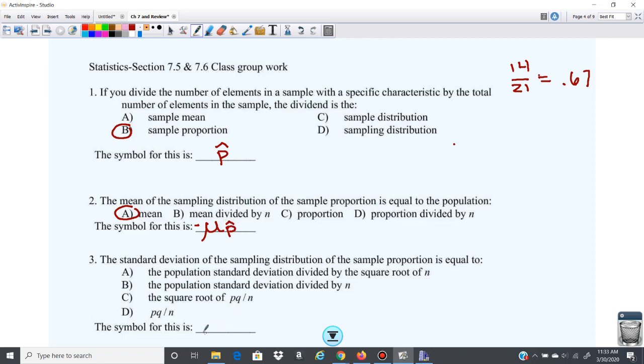And then the standard deviation is equal to, so we've got that standard deviation calculation, is this one here, the square root of PQ over n. So that one's C. And this symbol is the standard deviation of P hat.